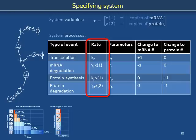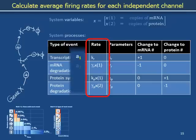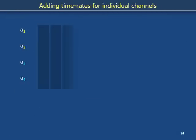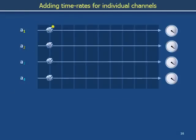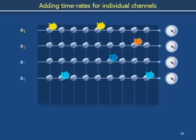We have specified the system with quantitative detail. We can now use the current state of the system to calculate the duration of time that elapses before the next chemical reaction occurs. Label these average time rates A1, A2, A3, and A4. Think of these time rates as the efficiencies with which individual dice rolls, representing short steps in time, generate chemical reaction events along these four simultaneous timelines.